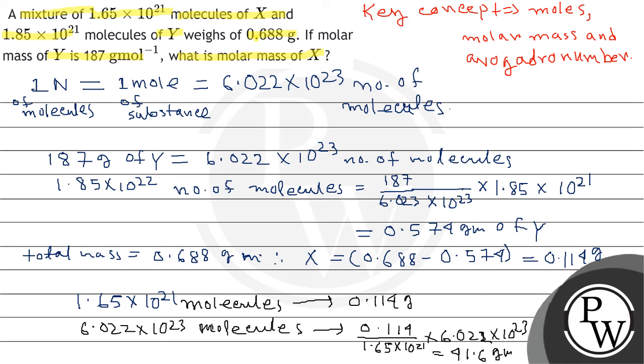तो इस तरीके से हमारा final answer: the molar mass of X is 41.6 gram per mole. Hope you understood it well. Best of luck.